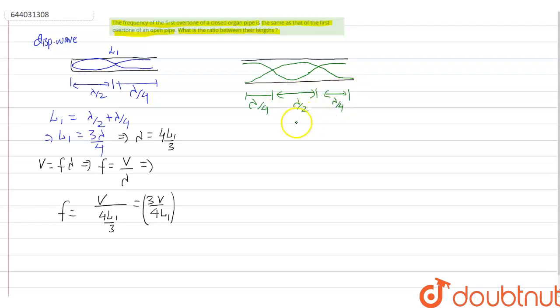So by adding these three lengths you can say, let's say the length of this open organ pipe is L2. So here lambda by 2 plus lambda by 4 plus lambda by 4 gives lambda equal to L2. So in this case the frequency will be equal to